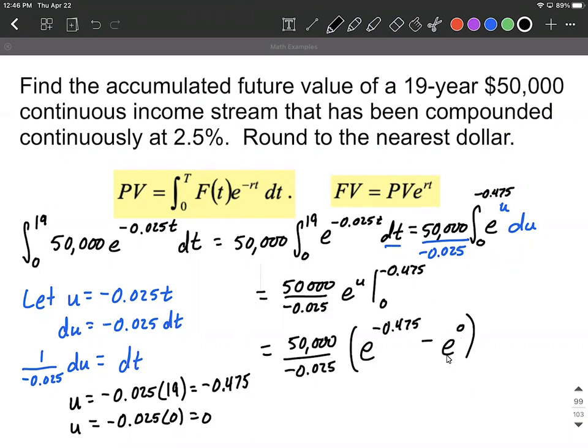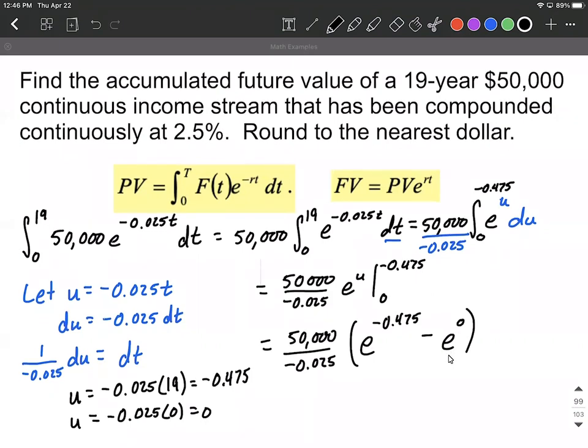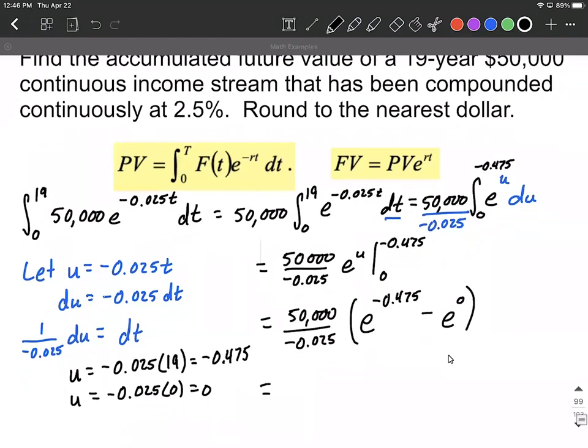E to the zero power is the same thing as one. So as I put this into our calculator, I'm going to keep all my decimal places, by the way, as we do this. So our PV present value is going to be 756,229.8871.